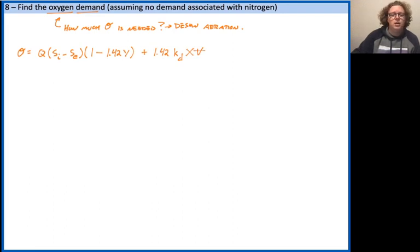And again, this is sort of an empirical approach. Discharge multiplied by the difference in BOD concentrations times 1 minus 1.42 times the yield. And then you see that second term where we're going to add that 1.42 multiplied by the decay rate or death rate, the concentration of microbes or VSS that we have, and volume.